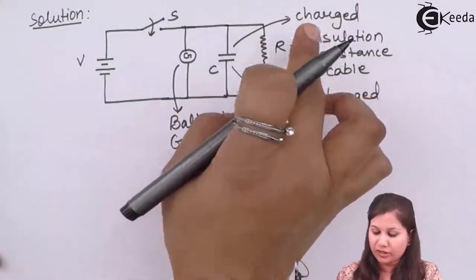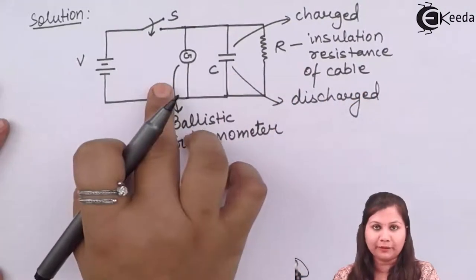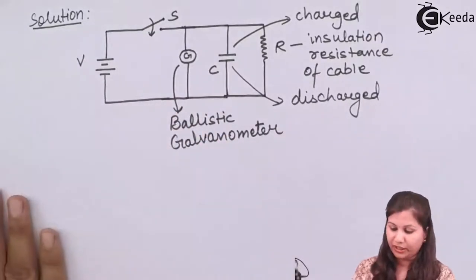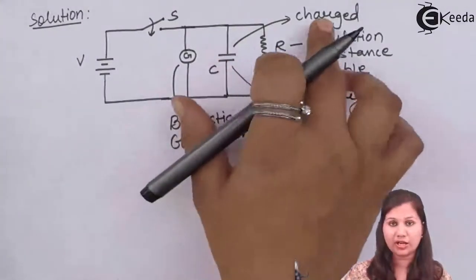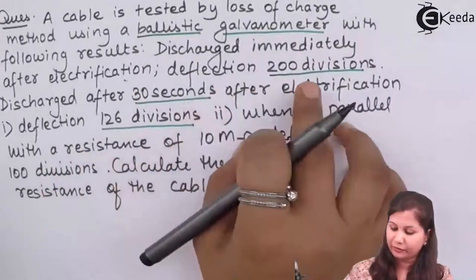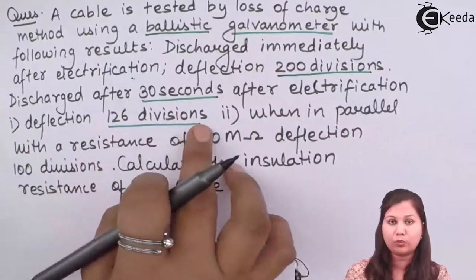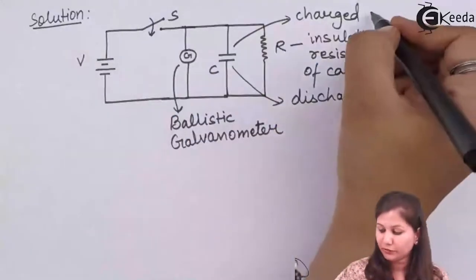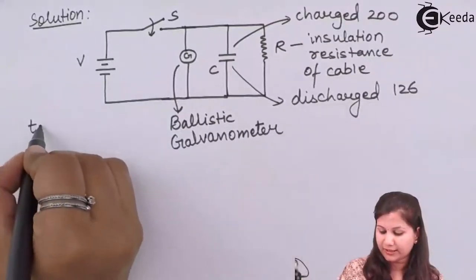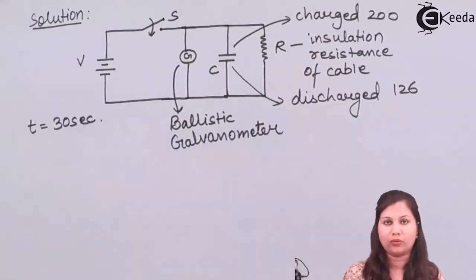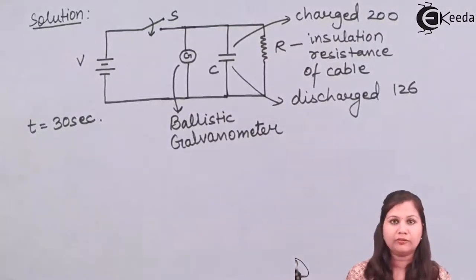The charging voltage and discharging voltage are both indicated by the ballistic galvanometer. When the capacitor is charged, the deflection is 200 divisions. After discharging over 30 seconds, the deflection is 126 divisions. The capacitor value C and resistance R are not given, so we use the formula for the loss of charge method.